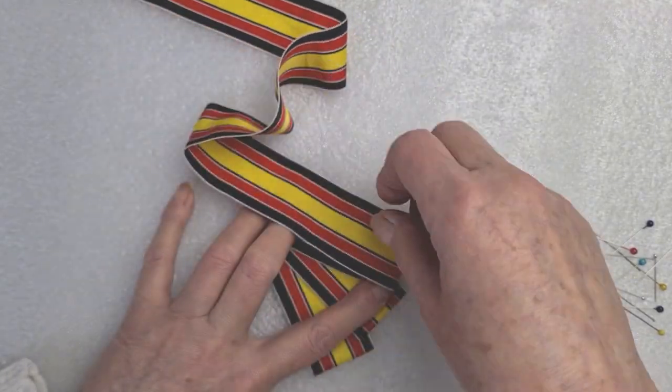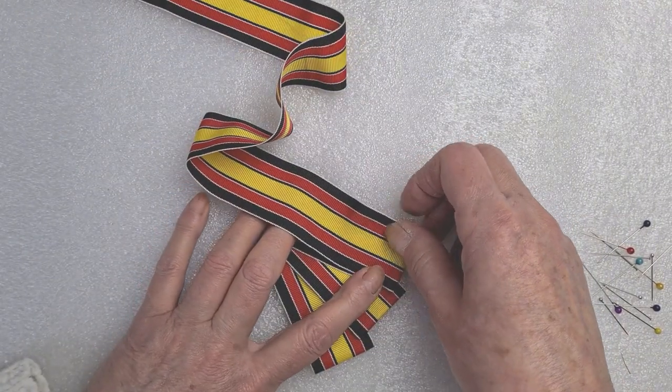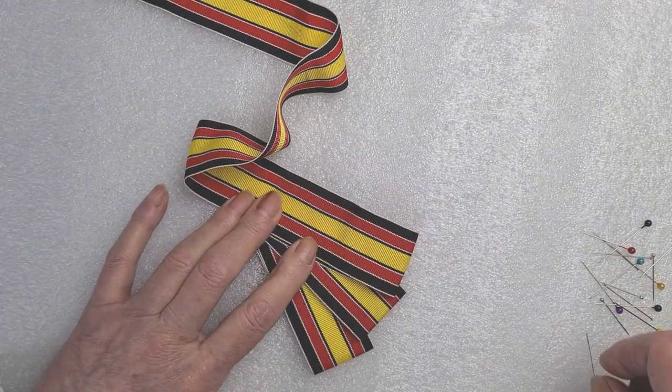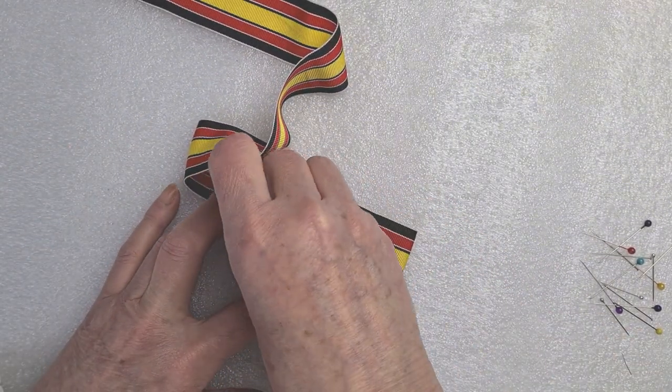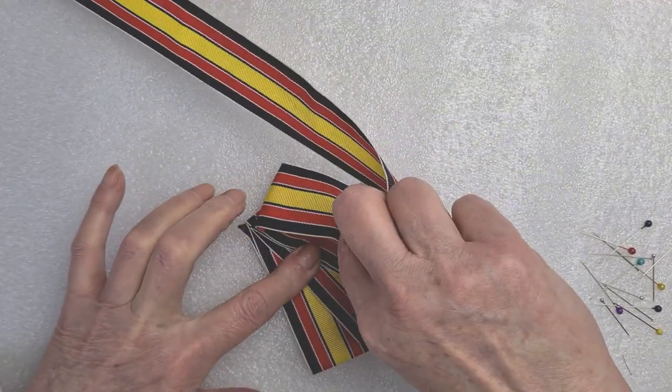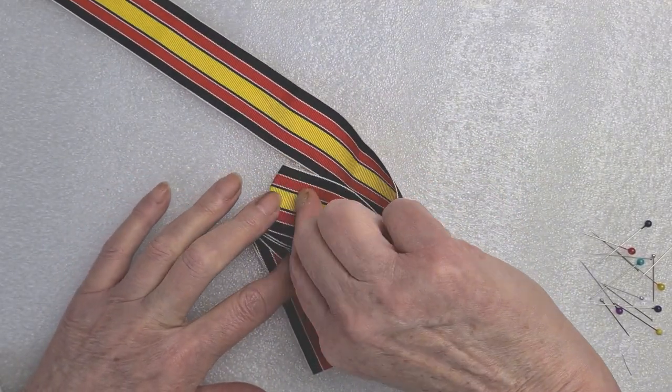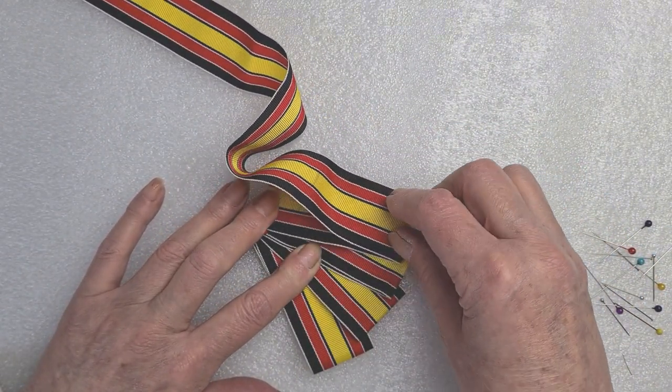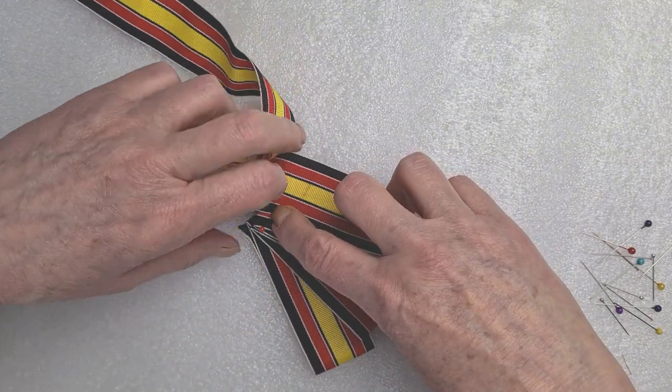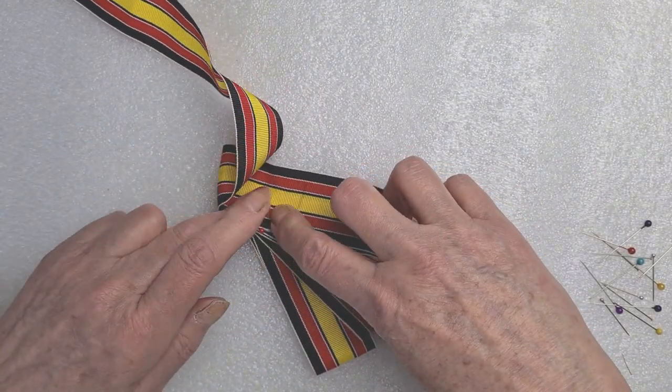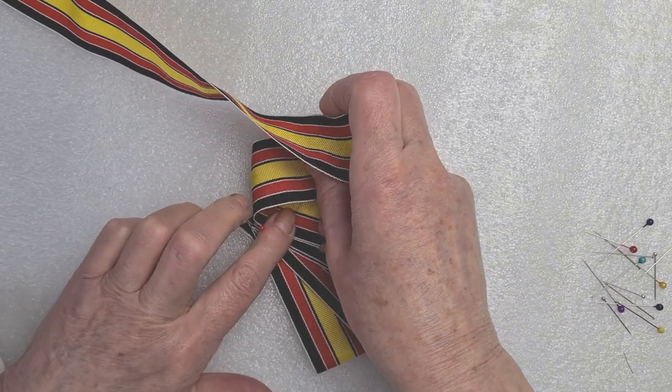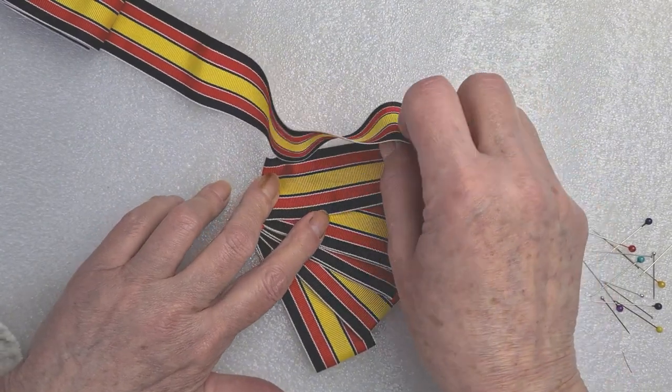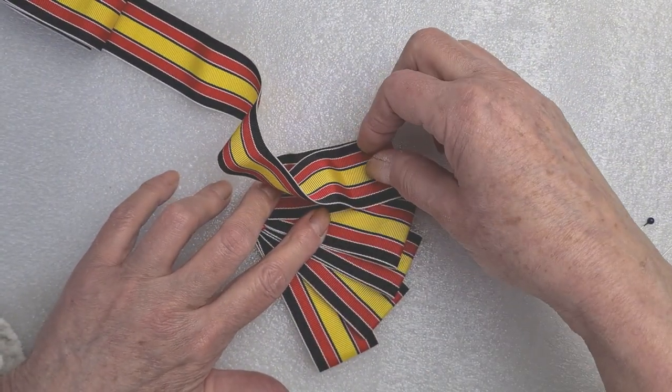Try and get them fairly even, so look and see where your points are. I'll put a pin in there just to keep me stable for a minute, and up we go again. Fold over and again a bit smaller. I'm going to carry on getting smaller and smaller and going round in what is effectively a spiral.